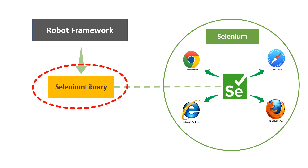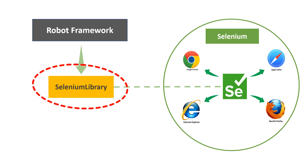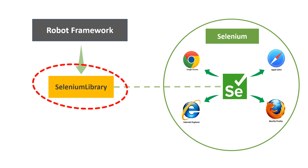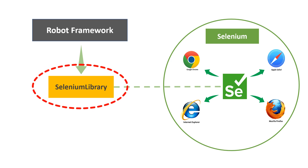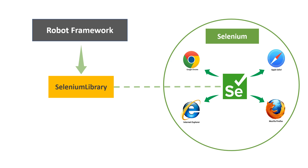Selenium library is a library written in Python, developed specifically for Robot Framework, which enables you to automate web browsers using Selenium through the various set of functions available in the Selenium library. We'll be deep diving into all these functions and doing a lot of automation, practical exercises, and project setup in this section.